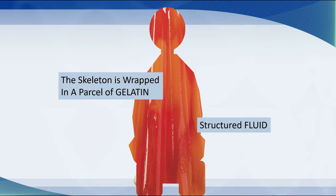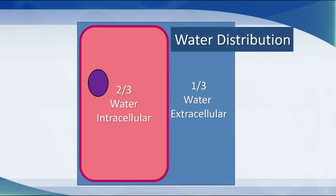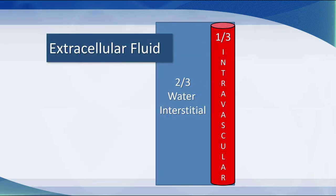The best way to think of gelatin is that it is structured fluid. When we think about water distribution in the body, two-thirds of body water is intracellular, and one-third is extracellular. Of that extracellular fluid, two-thirds is in the interstitial space, and one-third is in the intravascular space.